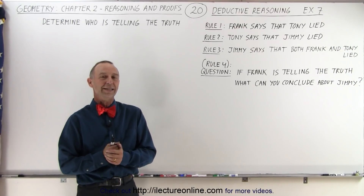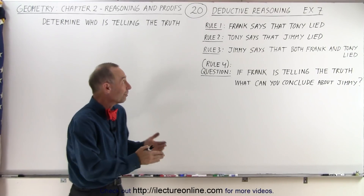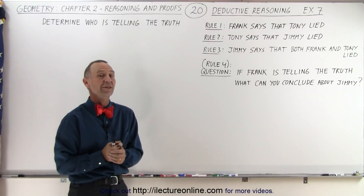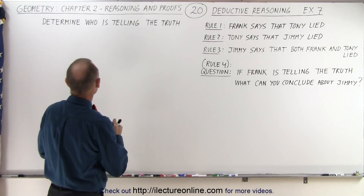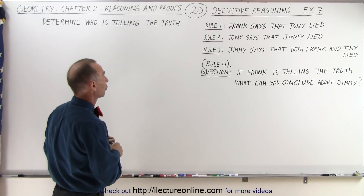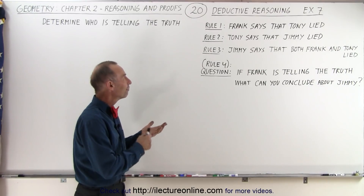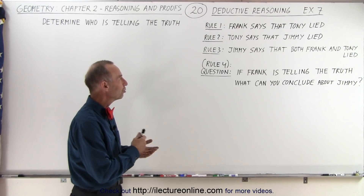Welcome to our Lecture Online. Here we have our next example of how to properly do deductive reasoning. We are asked to figure out who is telling the truth. So we have three individuals: Frank, Tony, and Jimmy.